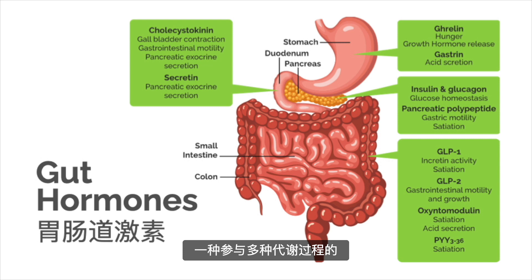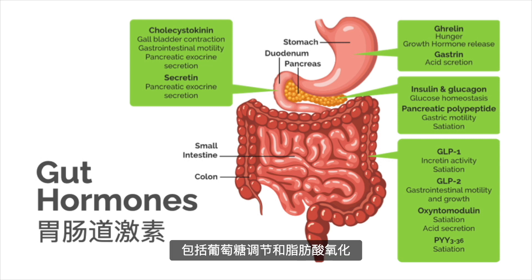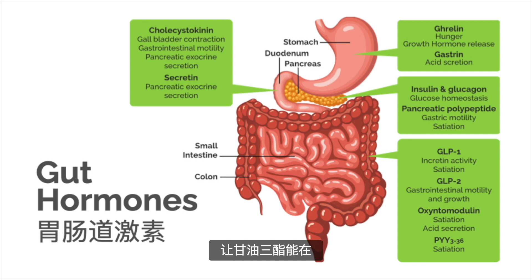Finally, adiponectin, a protein hormone involved in several metabolic processes including glucose regulation and fatty acid oxidation, can act as a peripheral starvation signal, promoting the storage of triglycerides preferentially in adipose tissue. Adiponectin has been shown to increase 60% to 115% in response to dietary fiber supplementation, thereby improving both glucose response and fatty acid oxidation.